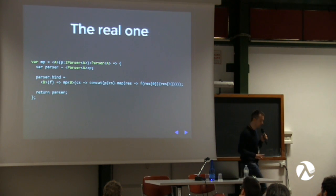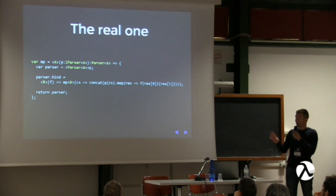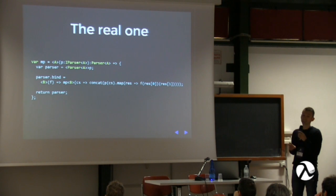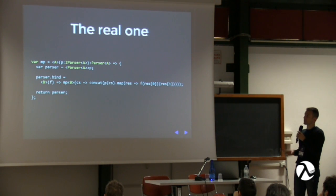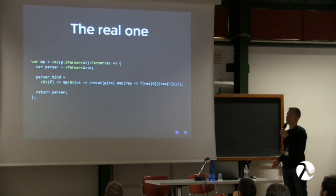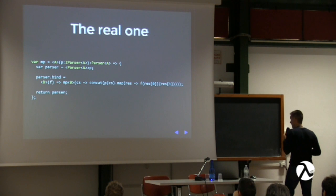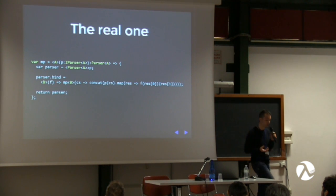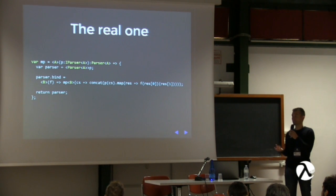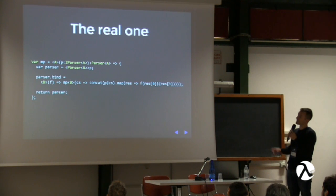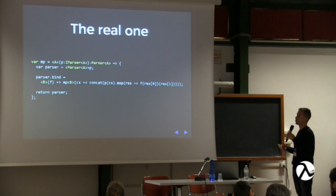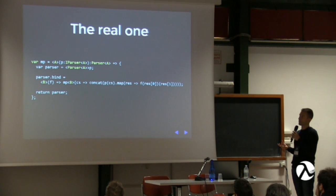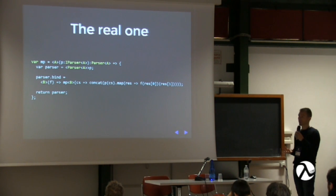This is my actual implementation of the parser monad with its bind function. I'm creating a function called MP — make parser — which takes P, an implementation of IParser, and returns a Parser. It may look strange: I'm casting P to a Parser, which is supposed to have a bind member it doesn't yet have, and then I assign it that bind member — the same implementation we saw before — and return it. This allows us to create a parser from just a function.